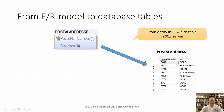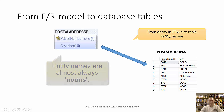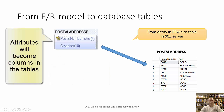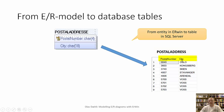Here we see an example of an entity. It's named postal address, and the entities will normally be nouns. Inside the entities we will see some attributes, and these attributes will become columns in a table. We see that postal address has become a table, and the postal number and city has become column names. Here we have inserted some data, but that is no part of the entity relationship model.